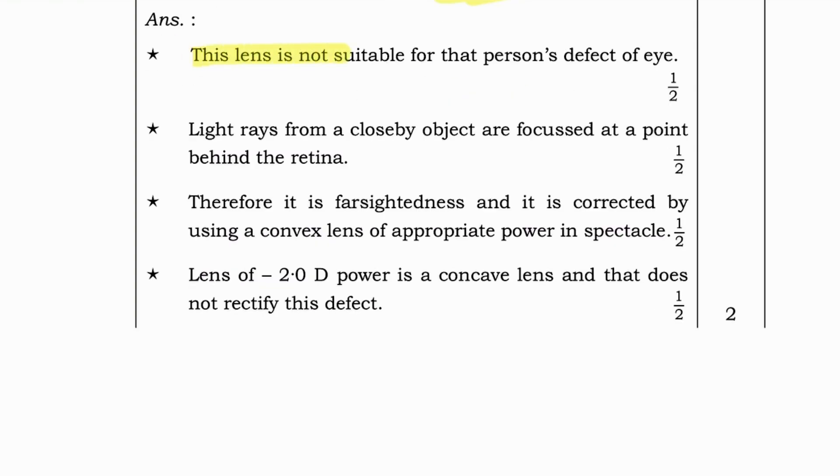And answer is. This lens is not suitable for that person's defect of eye. Light rays from close by objects are focused at a point behind the retina. Therefore, it is farsightedness. And it is corrected by using a convex lens of appropriate power in spectacle. Lens of minus 2.0 d power is a concave lens and that does not rectify this defect.